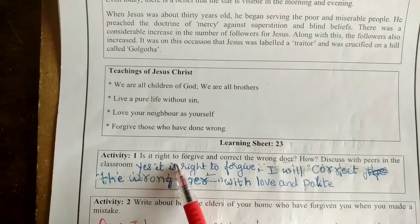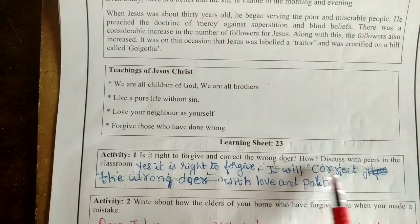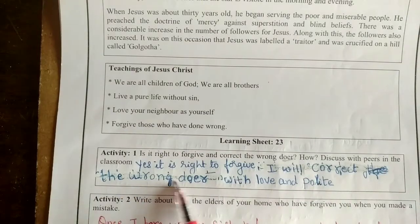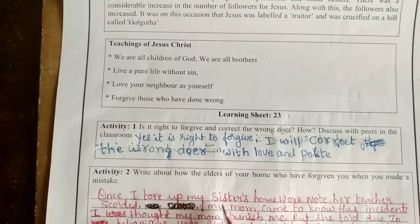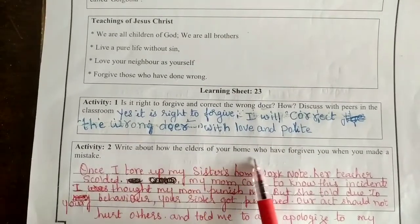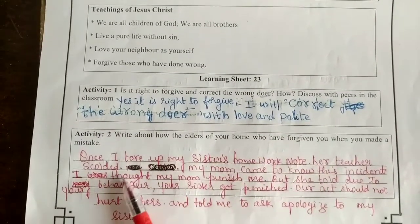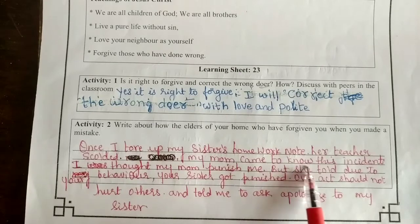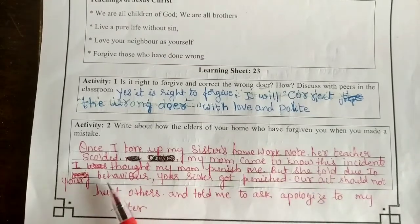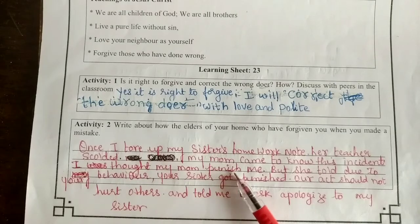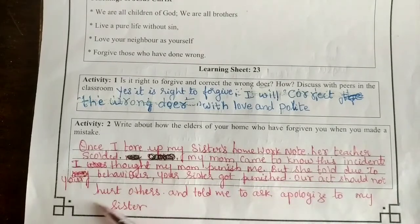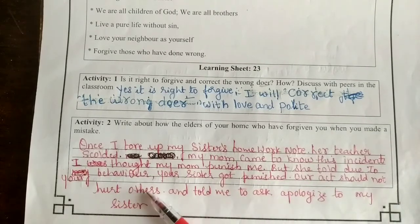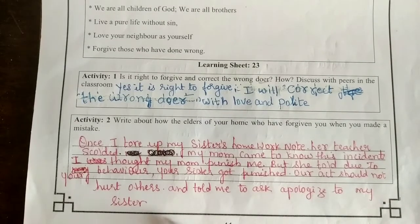Activity 1: Is it right to forgive and correct the wrongdoer? How? Discuss with the peers in the classroom. Yes, it is right to forgive. I will correct the wrongdoer with love and politely. Write about the elders of your home who have forgiven you when you made a mistake. Once I tore up my sister's homework note and our teacher scolded. My mom came to know this incident. I thought my mom would punish me, but she told me that due to my behavior, my sister got punished. Our act should not hurt others, and she told me to ask apology to my sister.